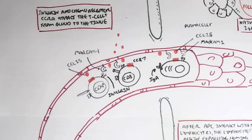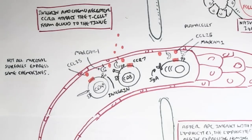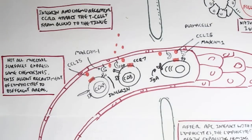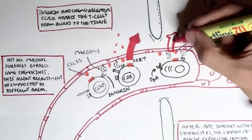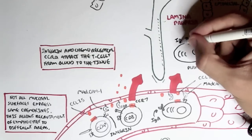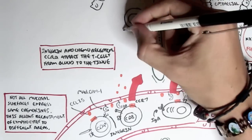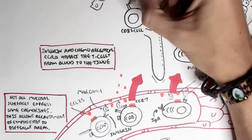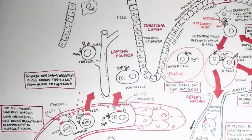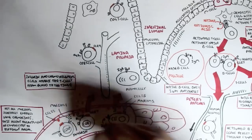Not all mucosal surfaces express the same chemokines and receptors, and this allows the recruitment of lymphocytes to different areas depending on the homing receptors. The immature plasma cell migrates through and becomes an activated plasma cell with the help of the T helper cell, expressing IgA antibodies, the most important antibody within the mucosal system. The CD8 T killer cells and CD4 T helper cells also migrate through into the lamina propria, with CD8 T cells also serving as T memory cells.